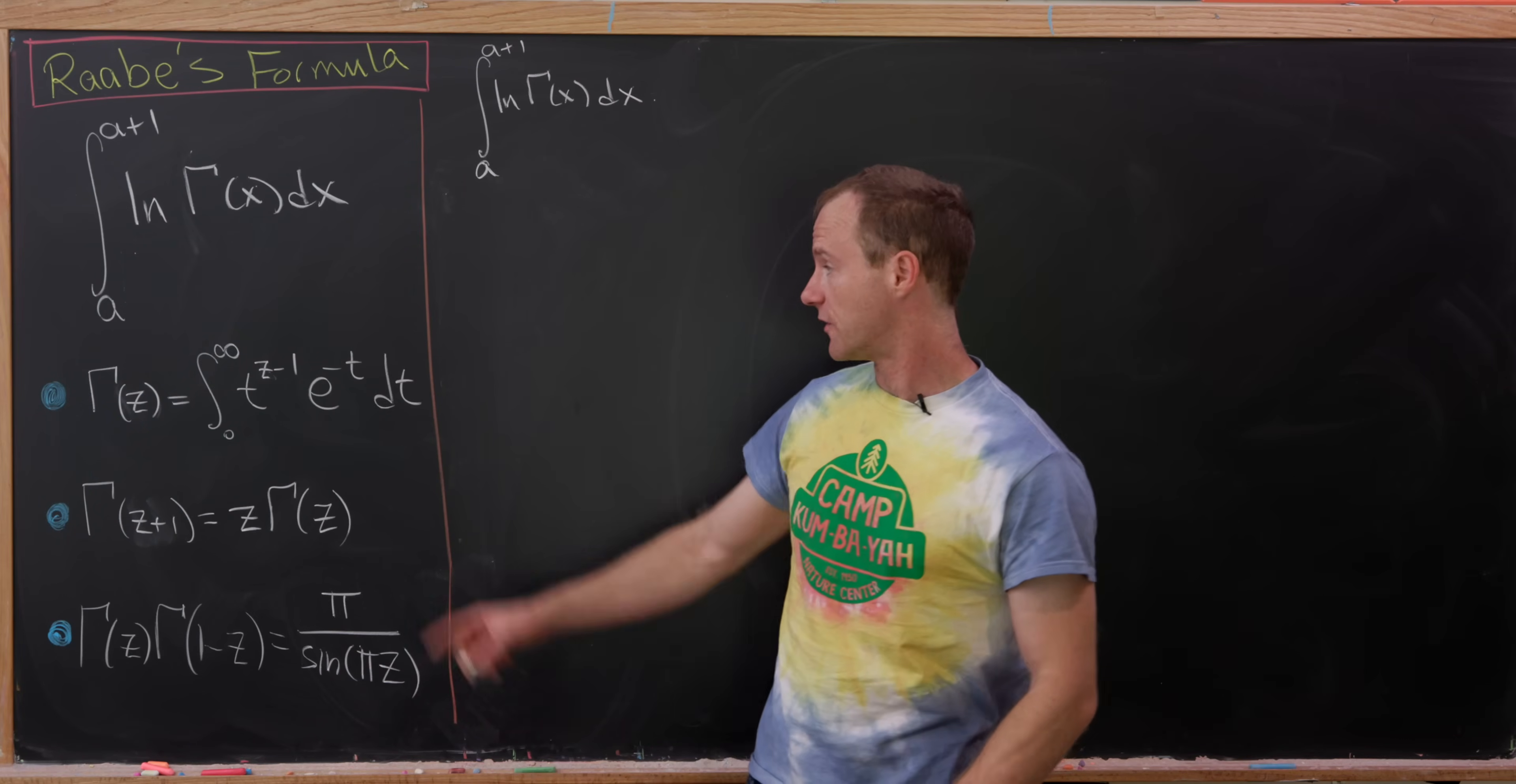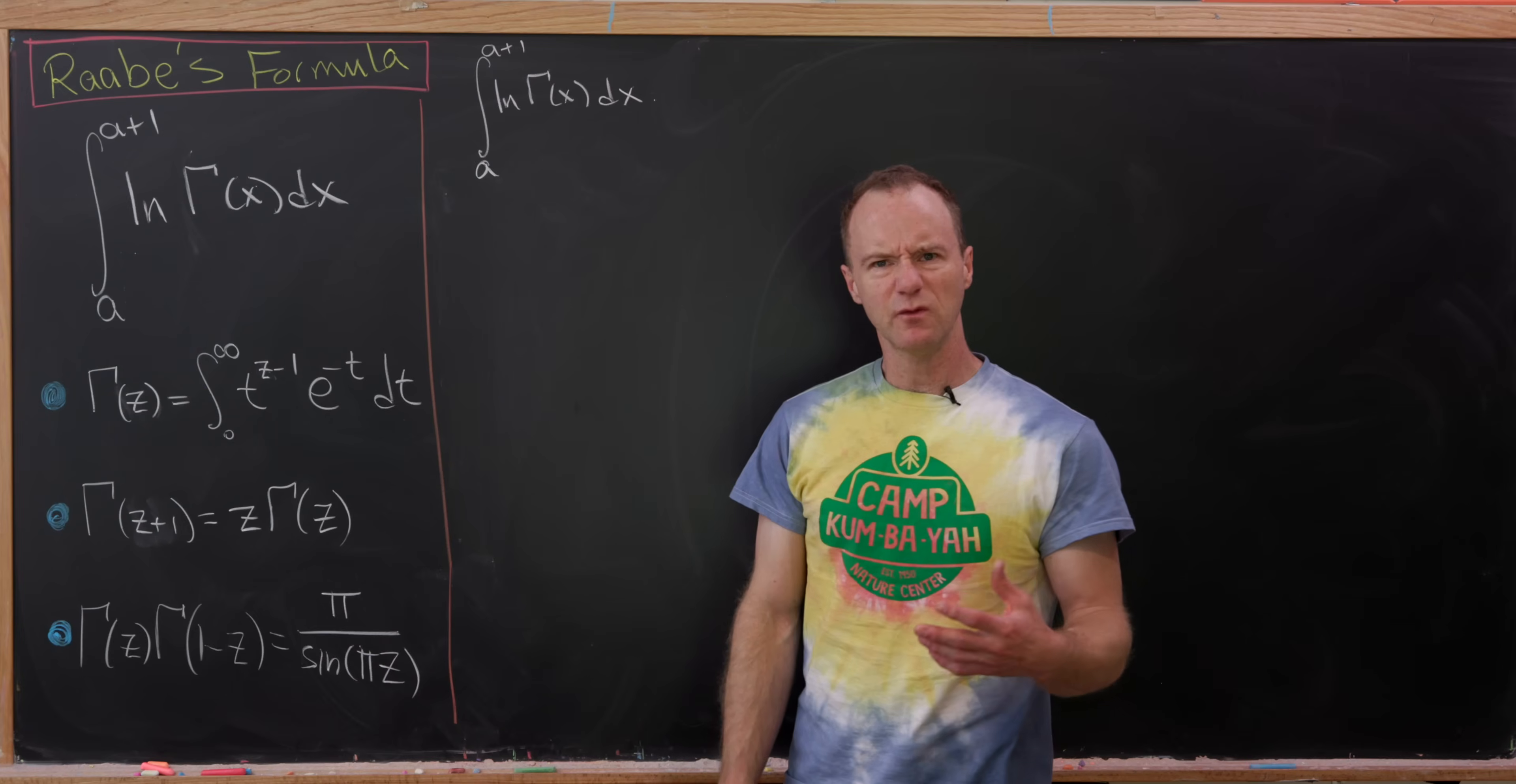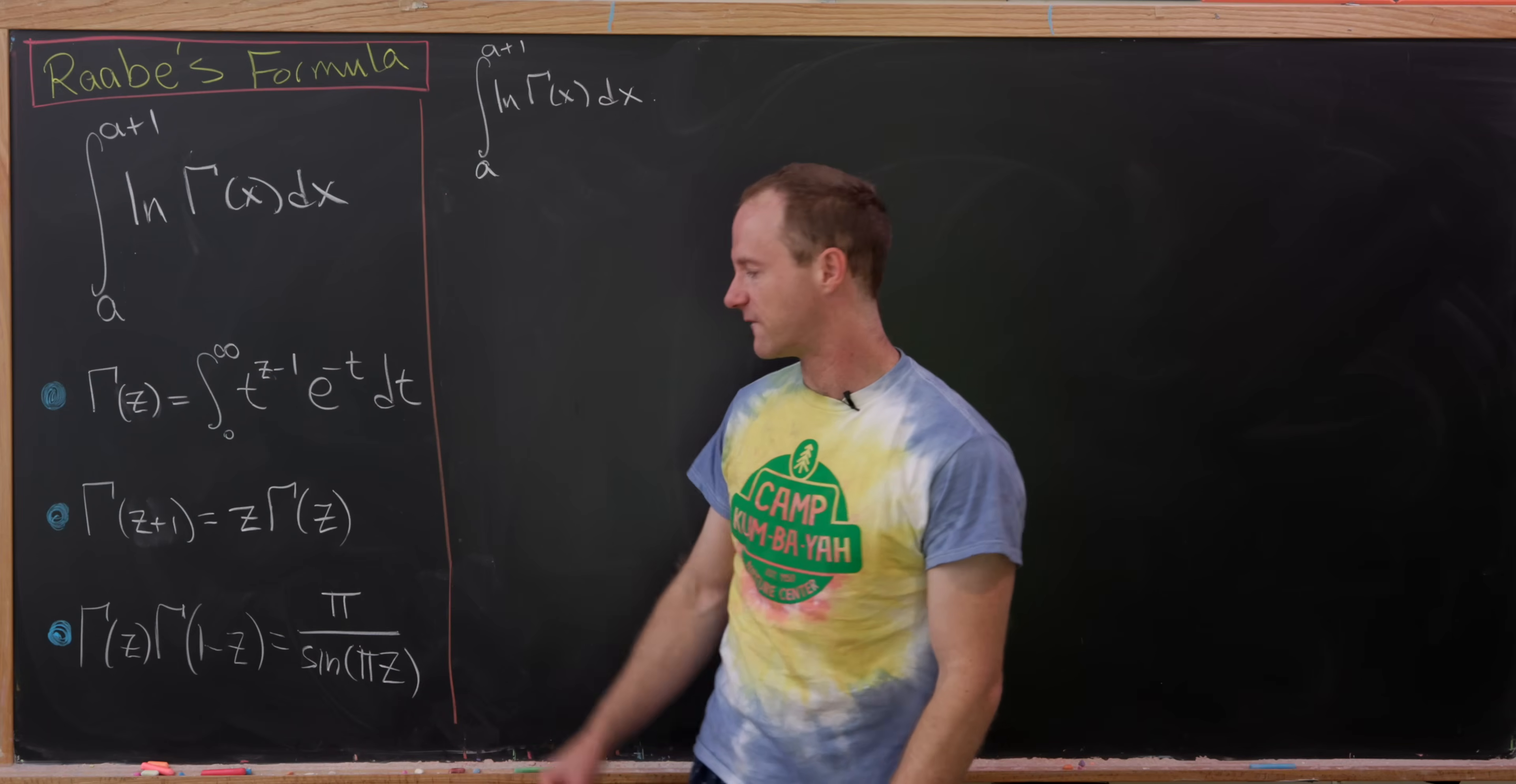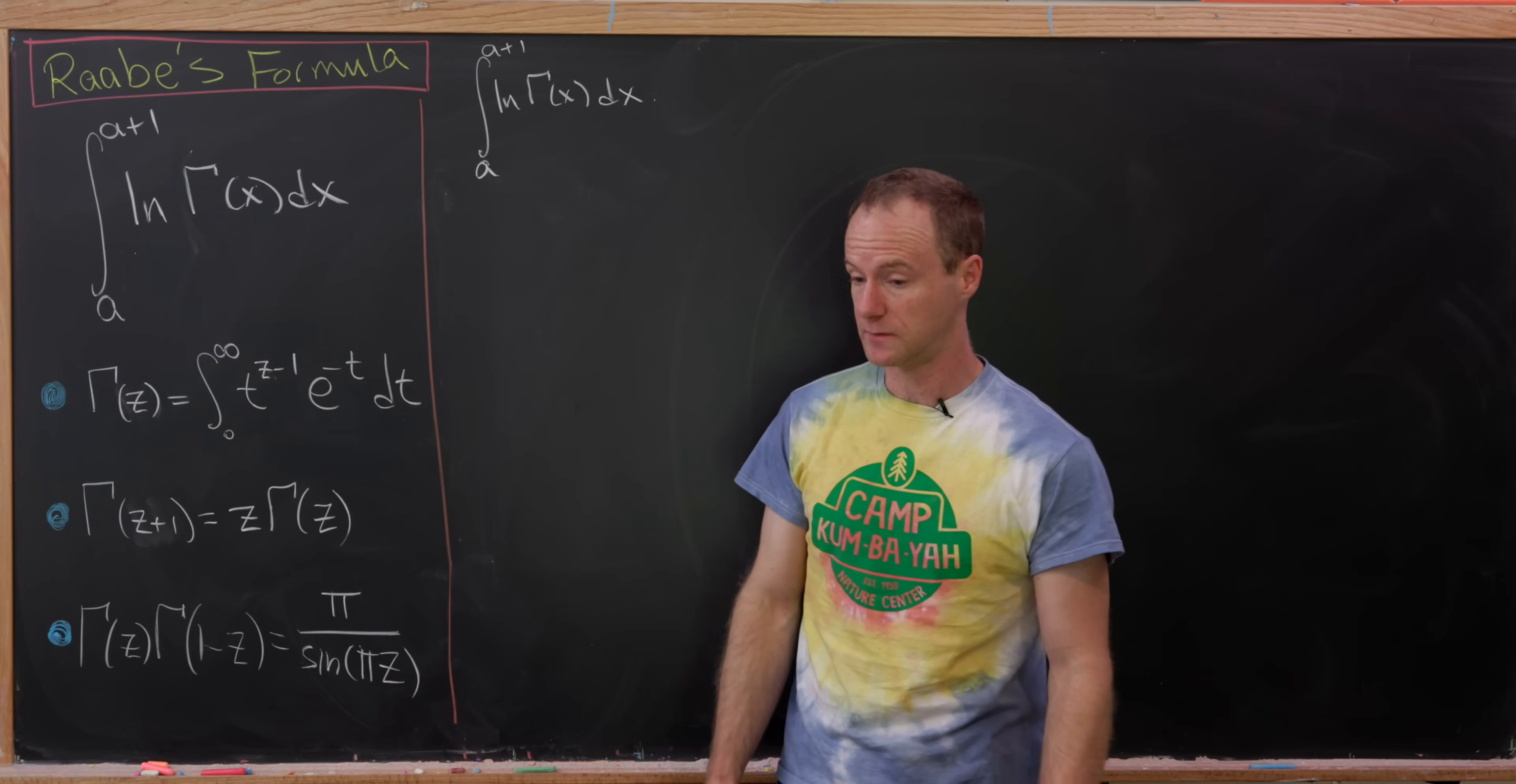So just to recall, the gamma function is defined in terms of the following integral, and this is true for almost all of the complex numbers. In fact, all of the complex numbers that are not non-positive integers. And then we've got this nice recursive formula for the gamma function that says gamma of z plus 1 is z times gamma of z, and then this nice reflective property of the gamma function as well. So gamma z times gamma 1 minus z is pi over sine pi z, and we're going to use these last two.